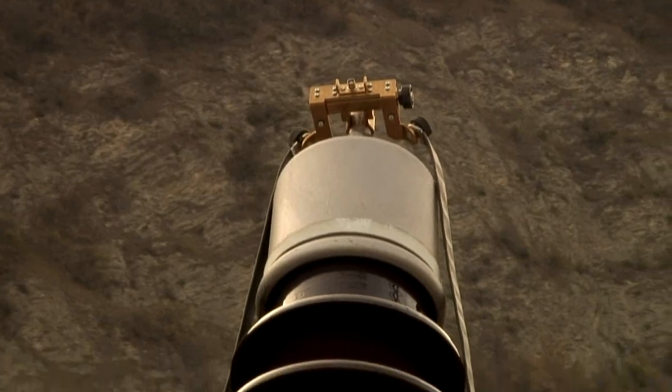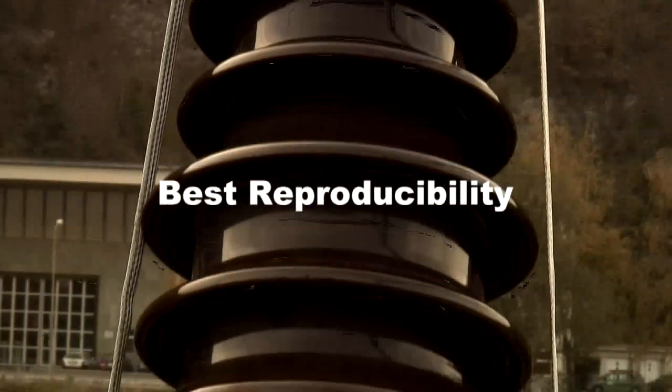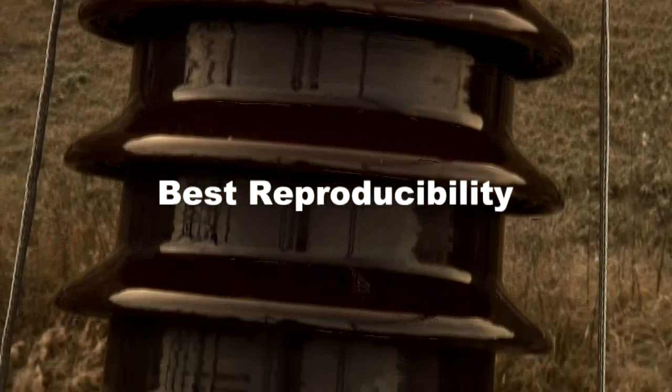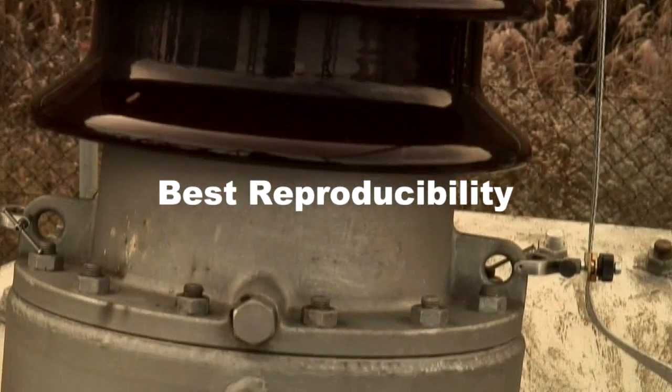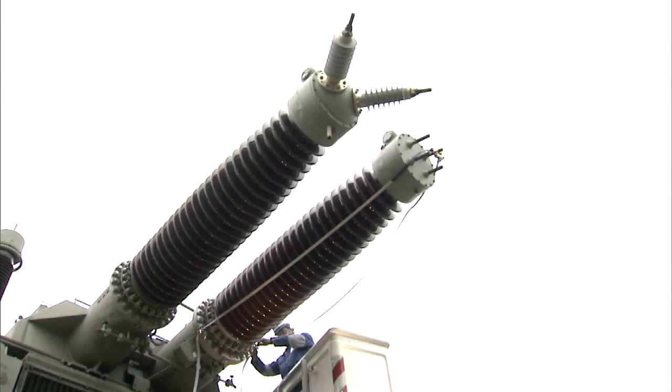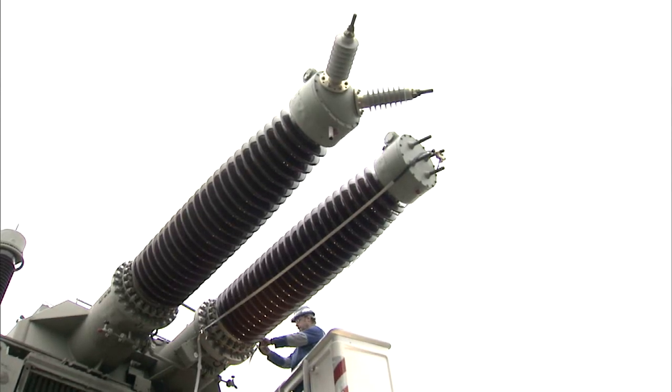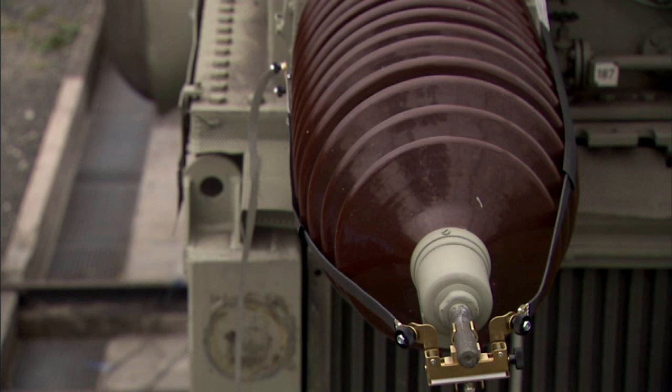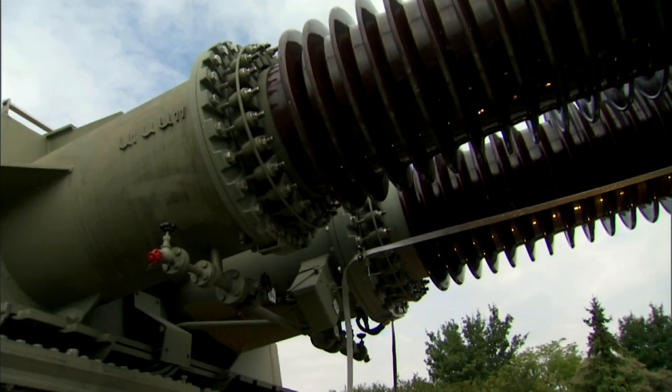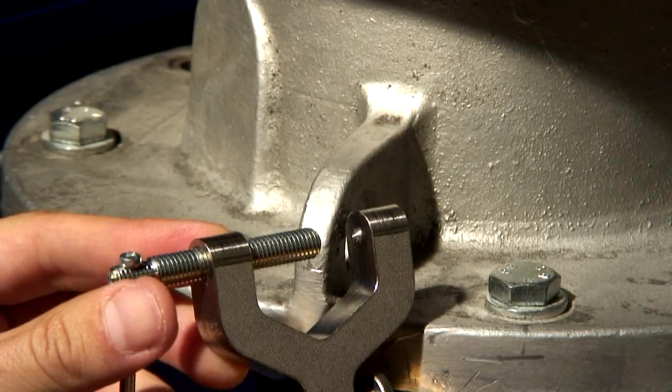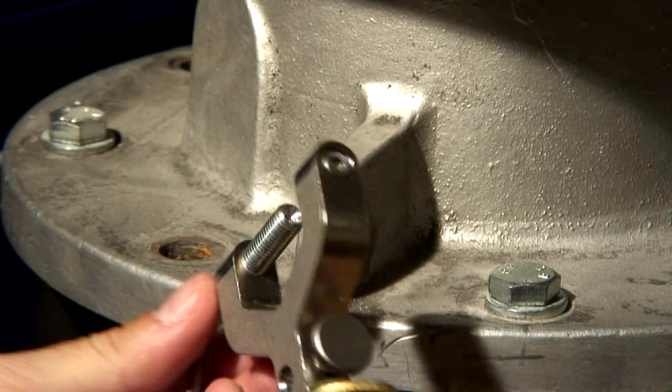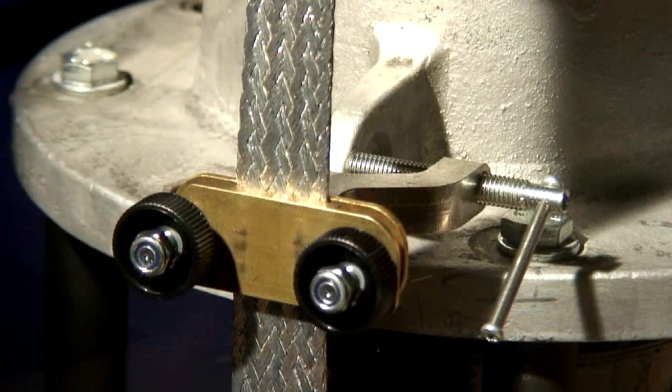Connection technique is critical to obtain precise and reliable results. The benefits of the Omicron method using clamped down braids include minimal pickup of interference signals due to connection close to the bushing, cancelling out of interference signals due to the use of two braided cables, minimal influence from the connection itself by using broad braids, and a high level of reproducibility due to a tight connection made using clamps and screws.